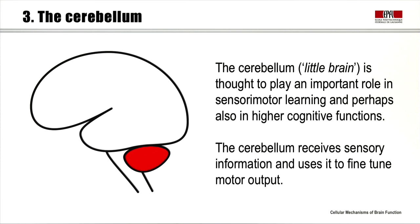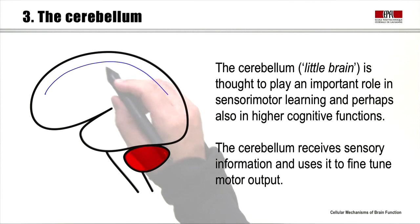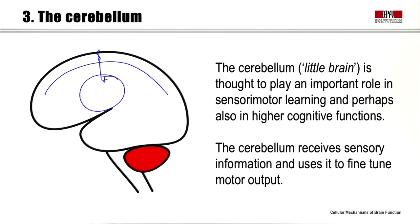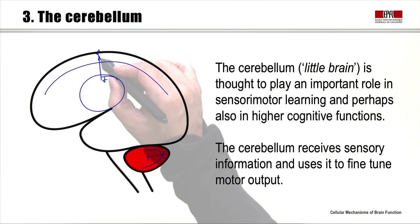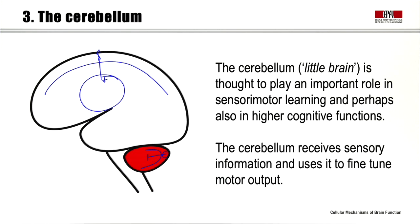The third long-range projection neuron to consider is the Purkinje cells of the cerebellum. The cerebellum — Latin for 'little brain' — is in some respects a miniaturized version of the main brain. The neocortex has glutamatergic projection neurons that excite deep brain areas; similarly, the cerebellum has a cortical structure, the cerebellar cortex, where the GABAergic Purkinje cells are located, and they inhibit the deep cerebellar nuclei.